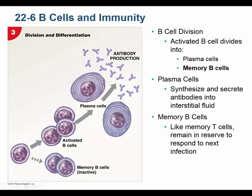The activated B-cells differentiate into plasma cells. It's actually the plasma cells that are making the antibodies. They're drawn with all that rough ER inside because antibodies are proteins, and rough ER makes proteins. So these plasma cells have a ton of rough ER — they're little protein-producing machines making antibodies. Not only do you have plasma cells that make antibodies, but you also have a pool of memory B-cells, which the next time they see that foreign antigen, become plasma cells quicker and make even more antibodies.